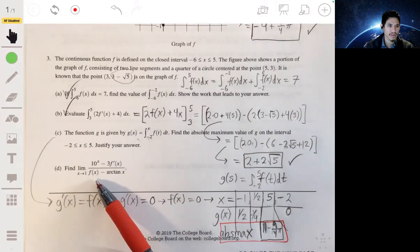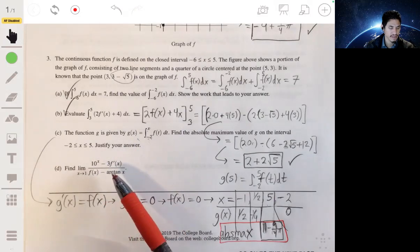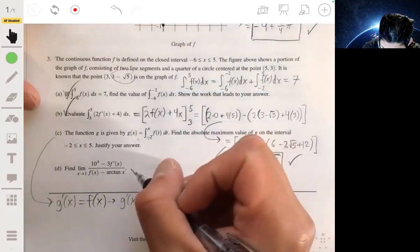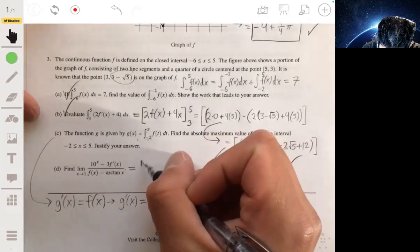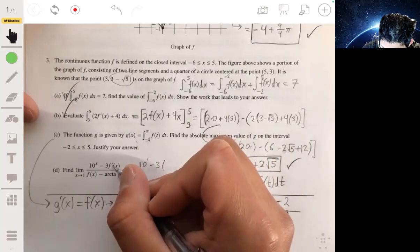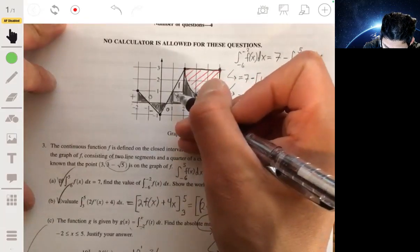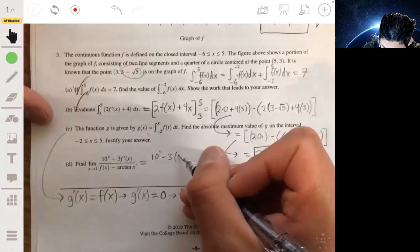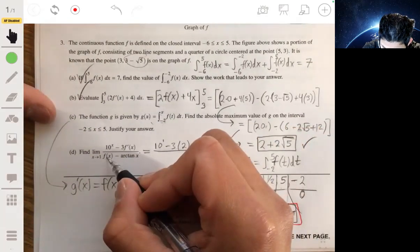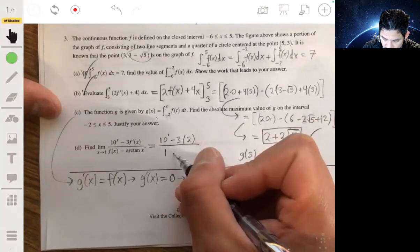Alright, part D: find the limit as x goes to 1 of this whole guy. Alright, let's just try to first plug in 1. I think it'll work. So 10^(1) minus 3 times f'(1). f'(1) is the derivative at 1 or the slope of this line. So this would just be 2 because the slope of this is just 2. So over f(1), going back to the graph, f(1) is just 1, minus the arctangent of 1.